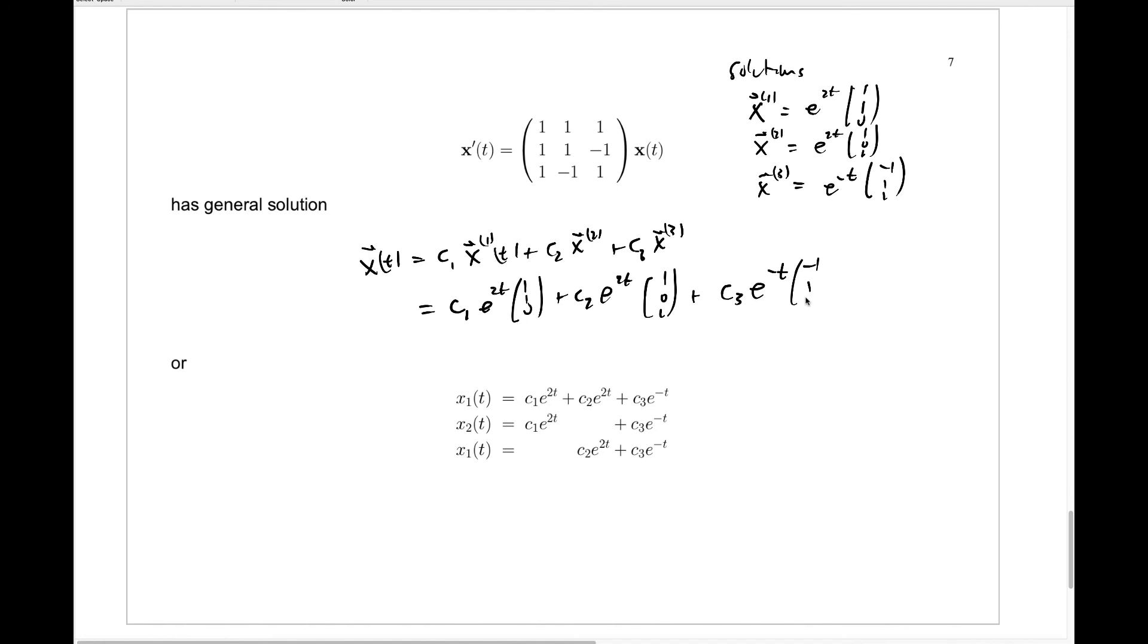And so that's the—and then what's in the first component here will be our function x1 of t, which will be c1 e to the 2t plus c2 e to the 2t plus c3 e to the minus t times negative 1. This should be a negative 1, so we should have a minus there. Important to check your work very carefully here.